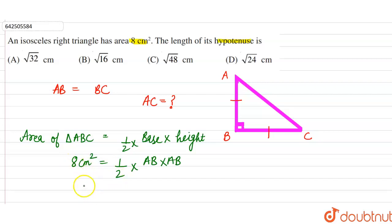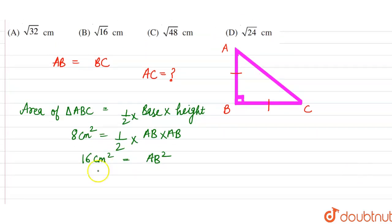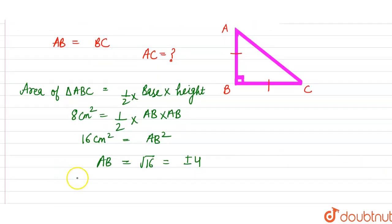So 8 into 2 is 16, meaning AB squared equals 16 centimeter square. Therefore AB equals under root 16, which equals plus or minus 4. Since we cannot take the negative value, AB equals 4 centimeter.